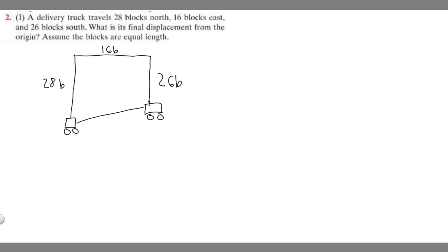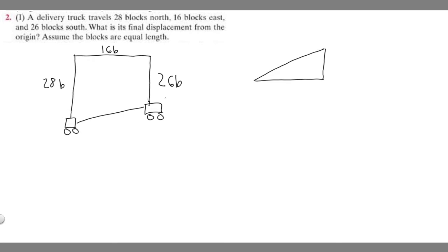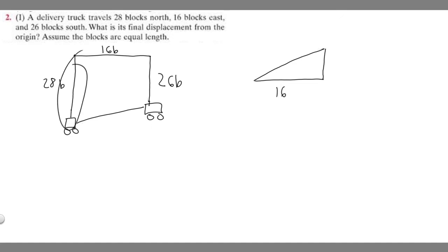Let's draw the triangle that represents this. What is this length going to be? The car starts here — let's imagine it's zero — and it travels 16 blocks this way, so this length is going to be 16. And then this length here is going to be: the car travels 28 blocks up and then 26 down. If we subtract 26 from 28, it's going to be two. So the difference here is going to be two — it goes 16 this way and two up.